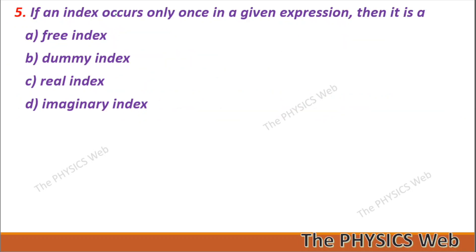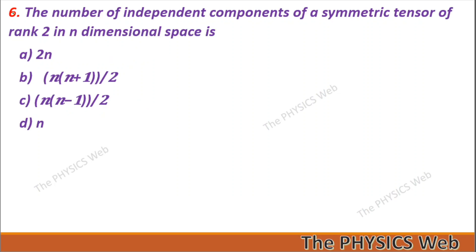Question 5: If an index occurs only once in a given expression, then it is a free index — so A is your correct option. Question 6: The number of independent components of a symmetric tensor of rank two in n-dimensional space is n(n+1)/2 — so B is your correct option.